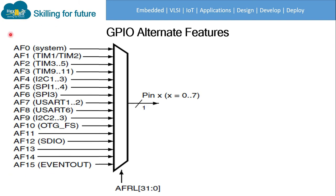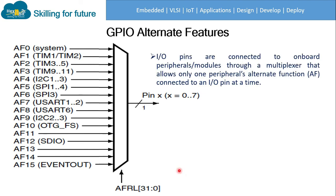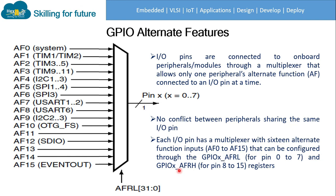There are multiple alternate functions, and using a multiplexer only one function can be active at a time. Input/output pins are connected to onboard peripherals or modules through a multiplexer that allows only one peripheral or alternate function to be connected to an input/output pin at a time, avoiding any conflict. Each input/output pin has a multiplexer with 16 alternate functions — AF0 to AF15 — configured through the GPIO alternate function low register for pins 0 to 7, and the alternate function high register for pins 8 to 15.